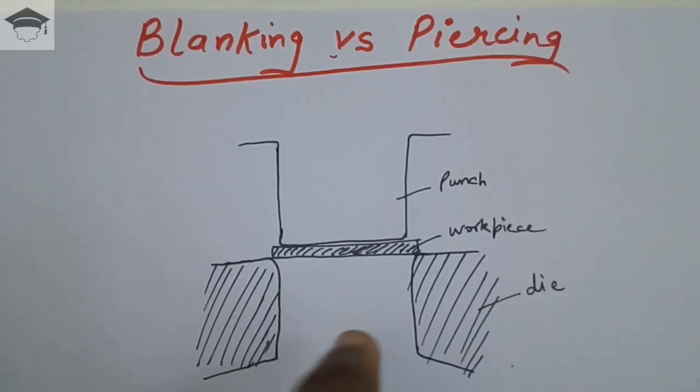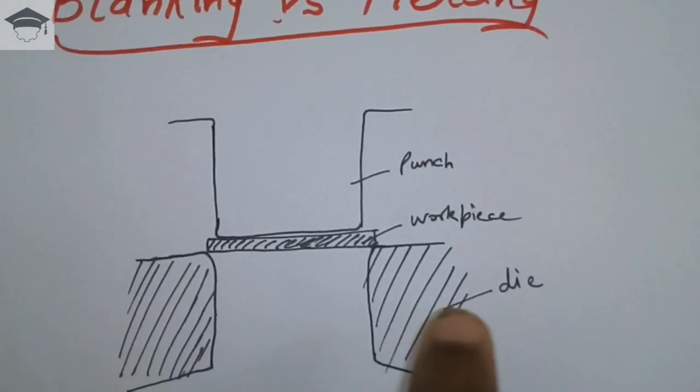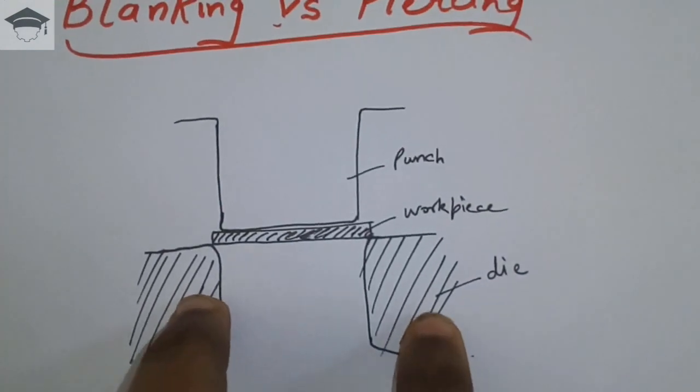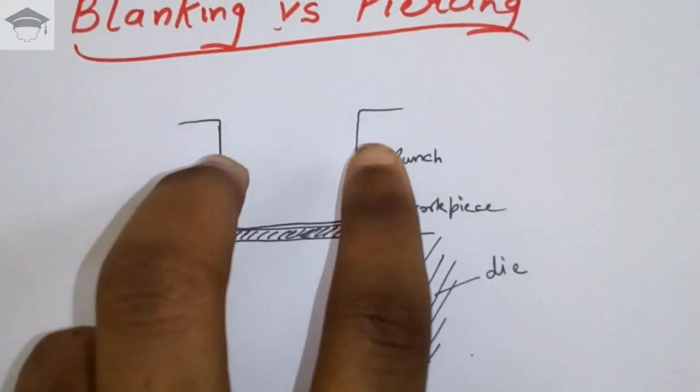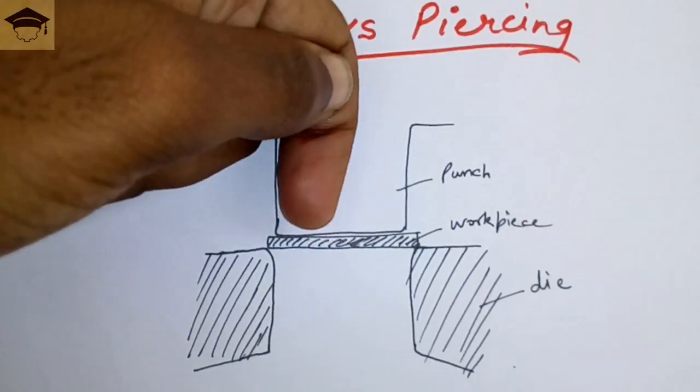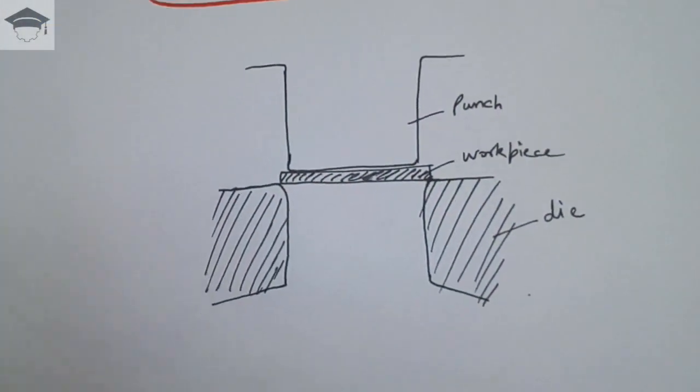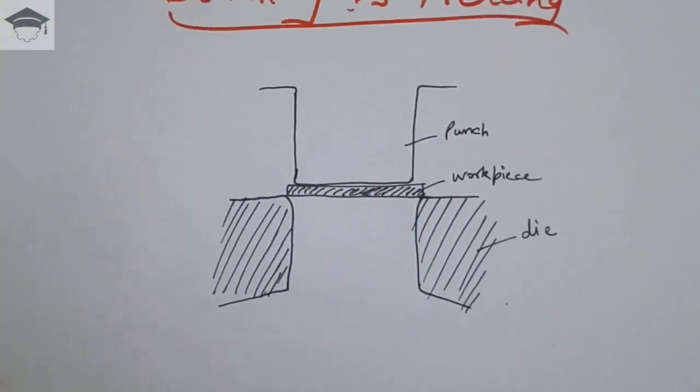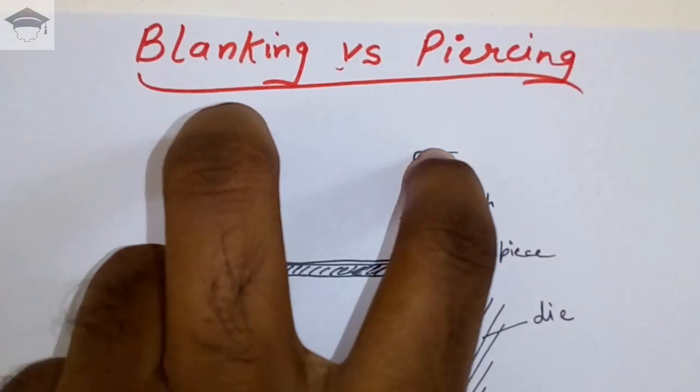This is the general terminology of sheet metal operations. This is the die, these two are dies. The workpiece, that is the sheet, is placed over the die, and this is the punch. The punch is driven by hydraulic force or mechanical force and it punches the workpiece, and the desired workpiece is obtained.